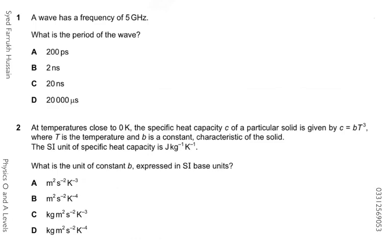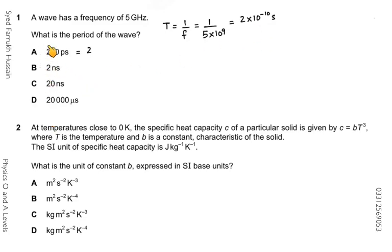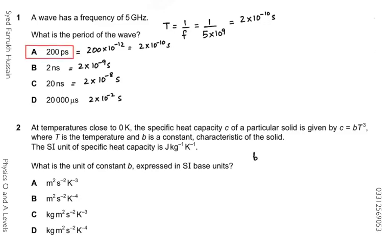In question number one, frequency is given and we must find the time period. Using T = 1/f, and frequency is 5 gigahertz where giga is exponent 9, we get T = 2 × 10⁻¹⁰ seconds. Checking option A: 200 × 10⁻¹² = 2 × 10⁻¹⁰ seconds — correct. Option B gives 2 × 10⁻⁹, C gives 2 × 10⁻⁸, and D gives 2 × 10⁻² seconds. So option A is correct.